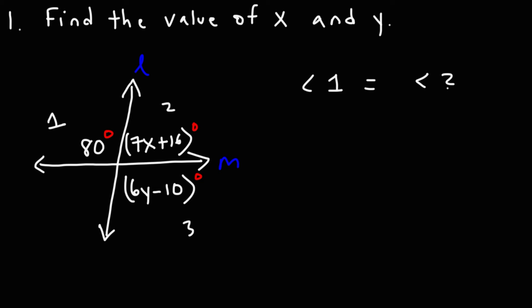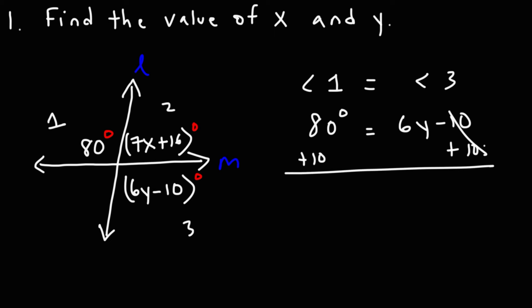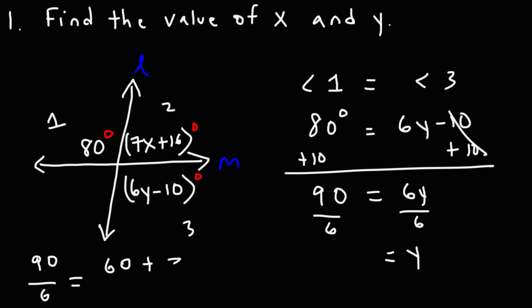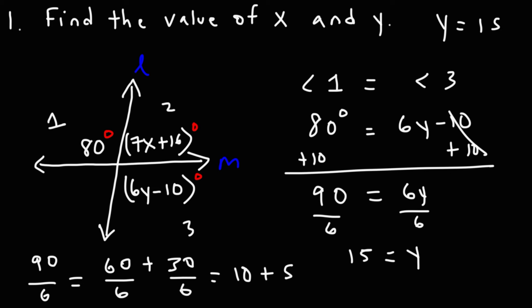Angle one equals angle three. Angle one has a measure of 80 degrees, and angle three is 6Y minus 10. So we solve for Y: adding 10 to both sides gives 90 equals 6Y. Dividing both sides by 6 — breaking 90 into 60 and 30 — 60 divided by 6 is 10, and 30 divided by 6 is 5, giving 15. So Y is equal to 15.